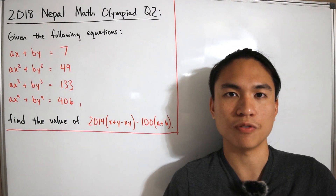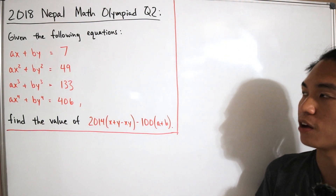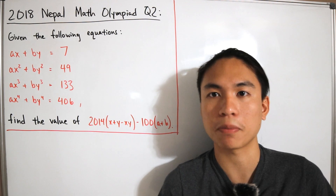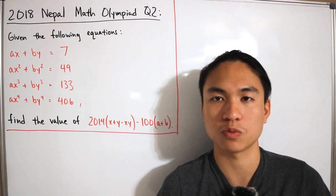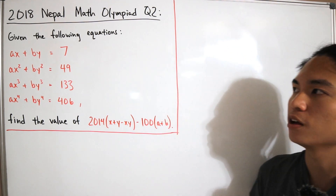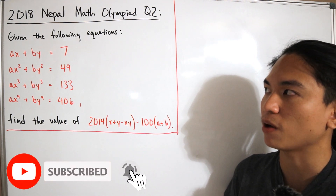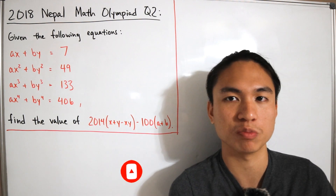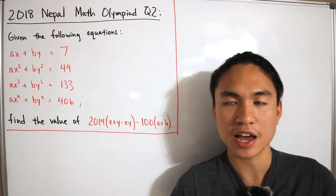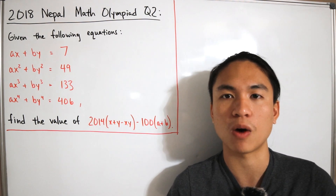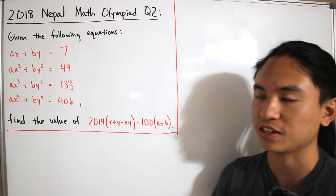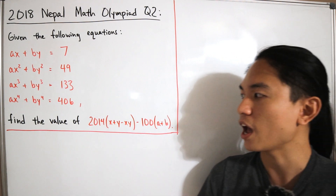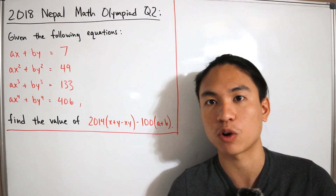Welcome back. Here we have question number two from the 2018 Nepal Math Olympiad, revolving around algebra. We are given four equations: ax + by = 7, ax² + by² = 49, ax³ + by³ = 133, and ax⁴ + by⁴ = 406. We're asked to find the value of 2014(x + y - xy) - 100(a + b).